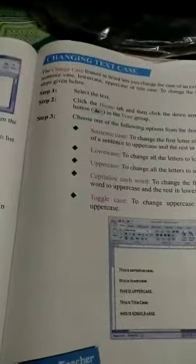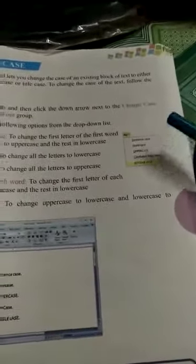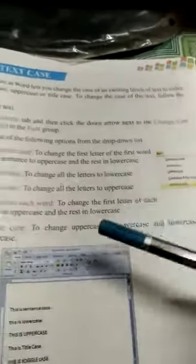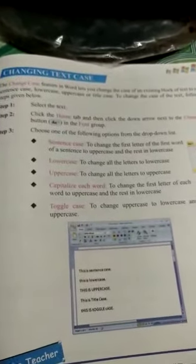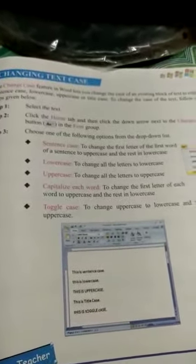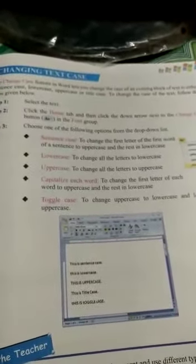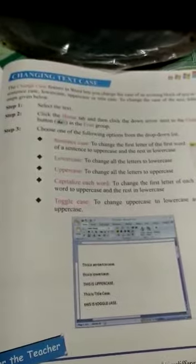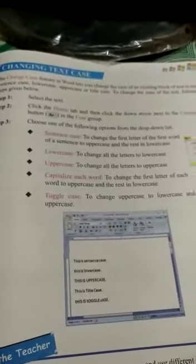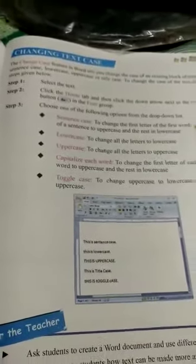Remember, we will find five types of Change Case in MS Word: Sentence Case, Lowercase, Uppercase, Capitalize Each Word, and Toggle Case. This is the Change Case feature in MS Word. To change the case of any existing block of text, follow the steps: select the text, click on the Home tab, then click the down arrow next to the Change Case button in the Font group, and choose one of the options from the drop-down list.